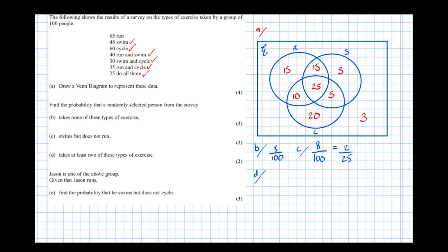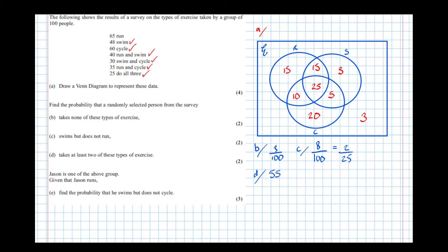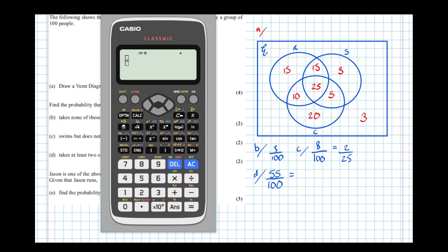Part D: the probability that a person takes at least two types of exercise. So we're looking for anything that involves at least two. This entry here is running and swimming, then this one and this one, and the centre is all three types. Therefore all of those regions are applicable. Adding them up: 15 plus 10 plus 25 plus 5 equals 55. So 55 out of 100 equals 11 out of 20.